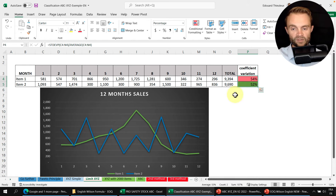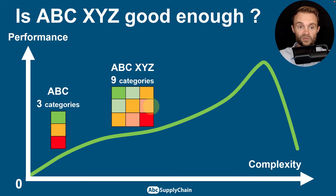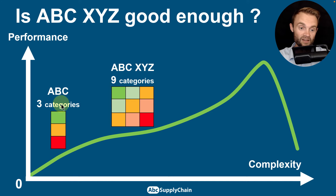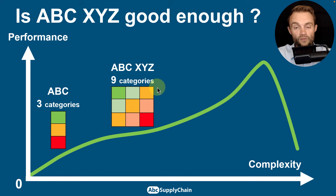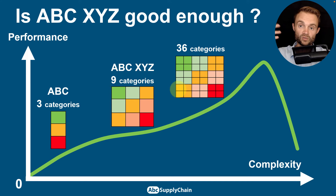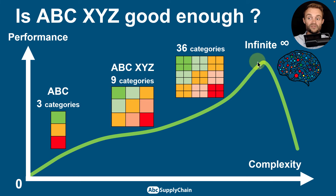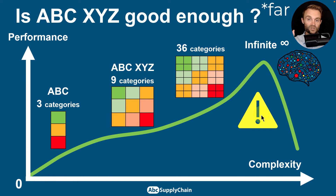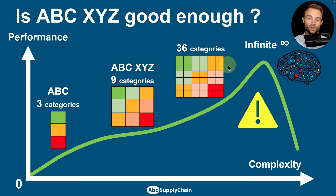To conclude on the question of whether ABC XYZ is good enough: there's always a tradeoff between complexity and performance. You must first master the basic ABC analysis — many companies haven't done this properly yet. ABC XYZ gives you nine categories and much more accuracy. You could go to 36 categories or multiple dimensions, but more complexity can become the enemy. If your data quality is poor, adding more dimensions will confuse people rather than help them.